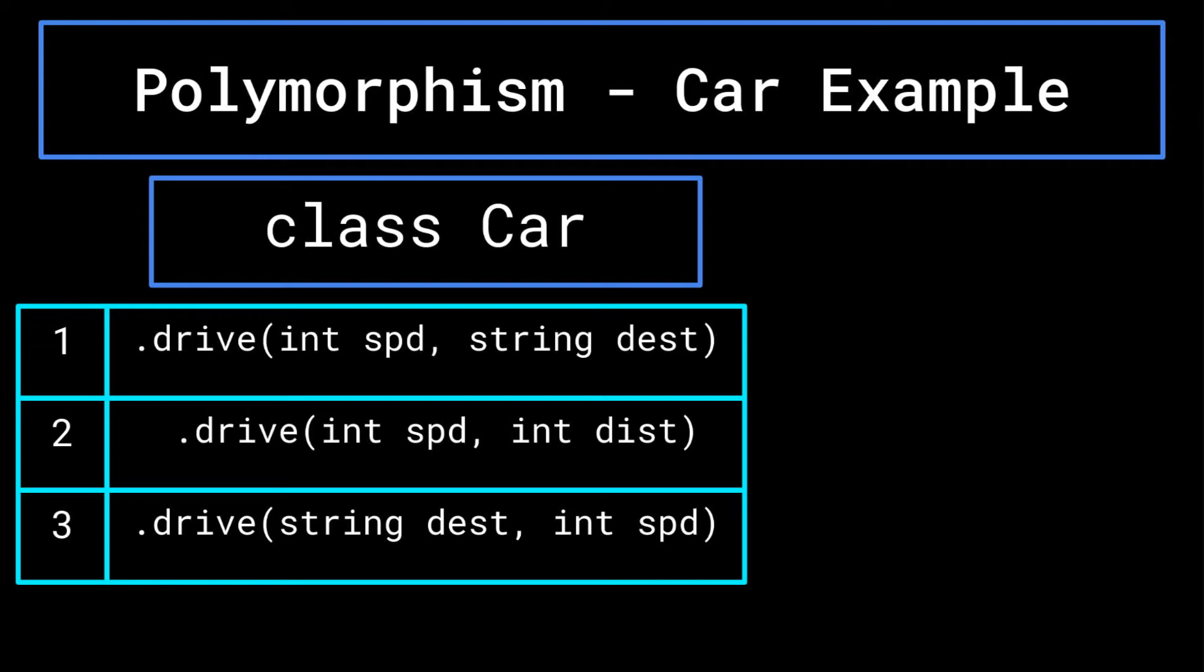In each of these three example methods, the method signature is different despite the methods having the same name. Therefore, the computer is able to tell the methods apart when the program is being compiled. For example, were I to call my car dot drive 45 work, drive method one would be called as the argument given indicates that this is the method I would like to call.